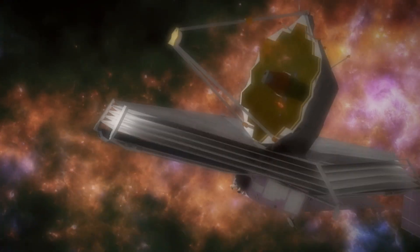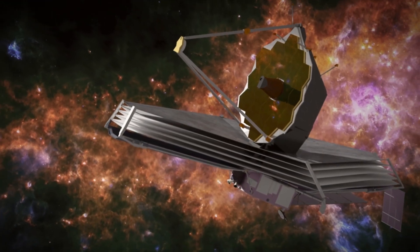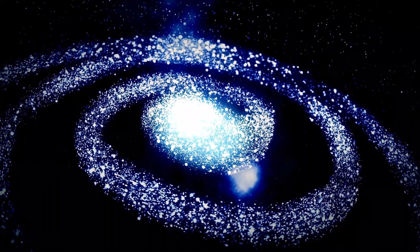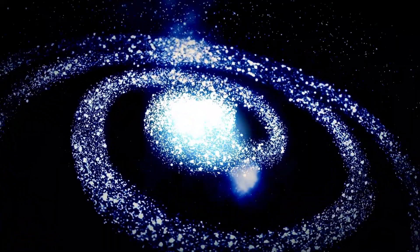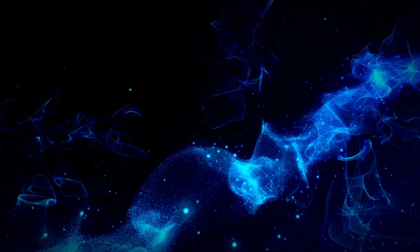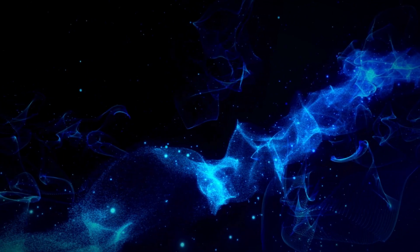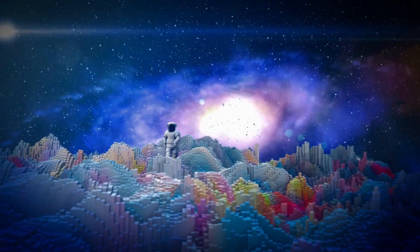The James Webb Space Telescope has recently achieved an astronomical milestone by capturing the most detailed image of Proxima b, an exoplanet located in our galactic backyard. This breakthrough has illuminated incredible features of this world, suggesting its potential to support life.